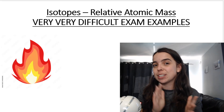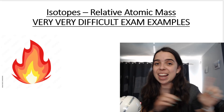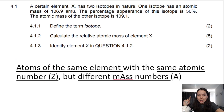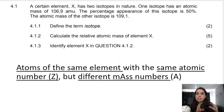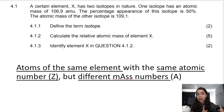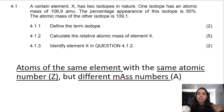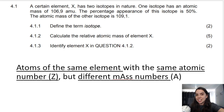First of all, just as a reminder: isotopes are atoms of the same element. They have the same atomic number, same number of protons, but different mass numbers because the number of neutrons differ.